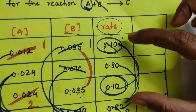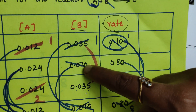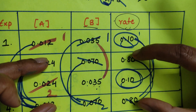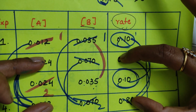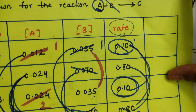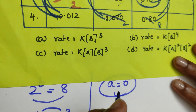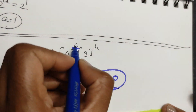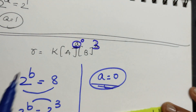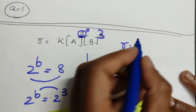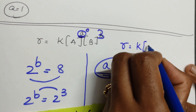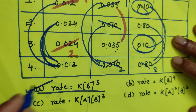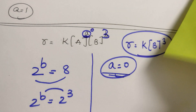Summary: if when B concentration is held constant and A changes but rate stays constant, order with respect to A is zero. With a = 0 and b = 3, since anything to the power of zero doesn't affect the rate, the rate expression is rate = k[B]³. The first option is your correct answer.